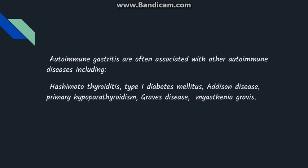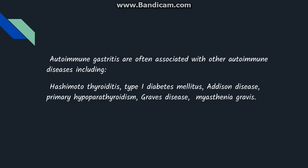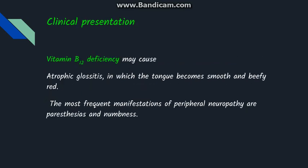Autoimmune gastritis is often associated with other autoimmune diseases, including Hashimoto's thyroiditis, type 1 diabetes mellitus, Addison's disease, Graves' disease, and myasthenia gravis.